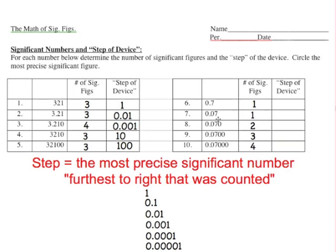The rest of these are pretty simple because they're all decimals. Anytime there's a decimal, it's easier to see the precision of the measurement. Here we ignored this zero but counted this one, so 0.7 is in the tenths position. Hit pause in the video and see if you can fill in the last four. The second one, number seven, is precise to the hundredth because it's this seven we counted.